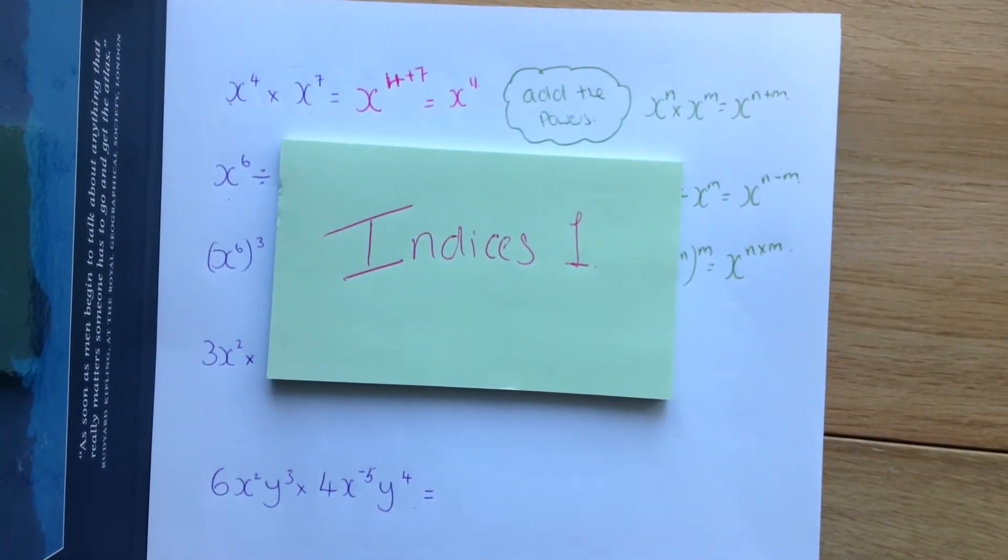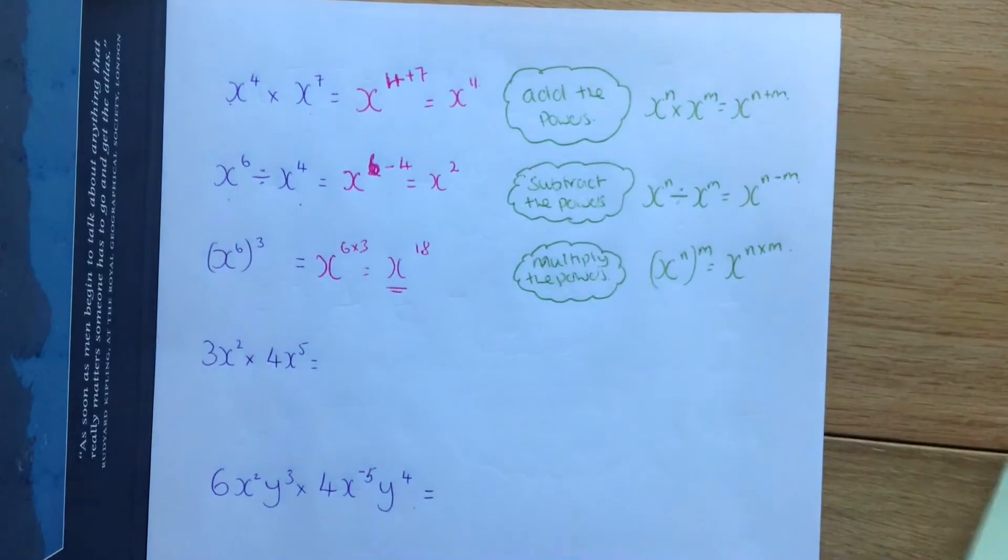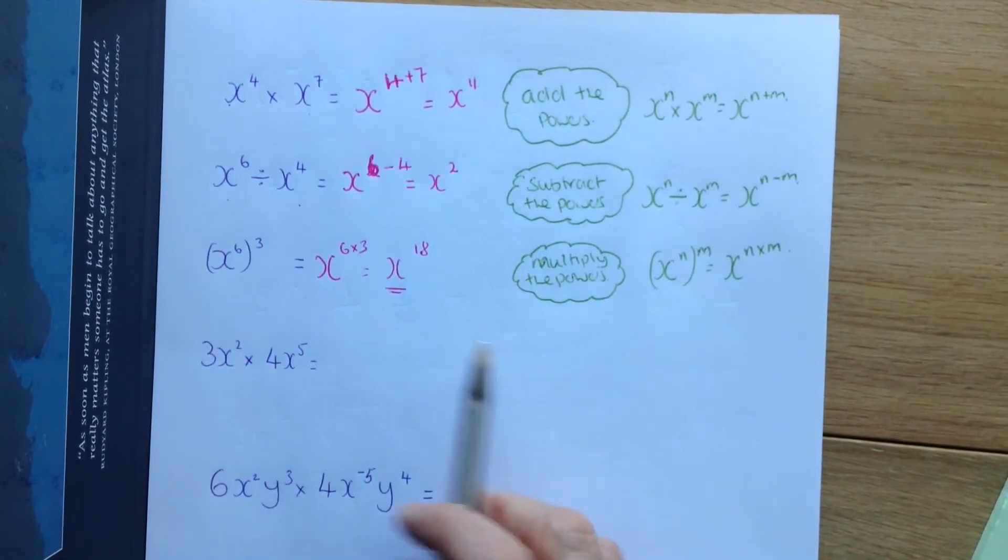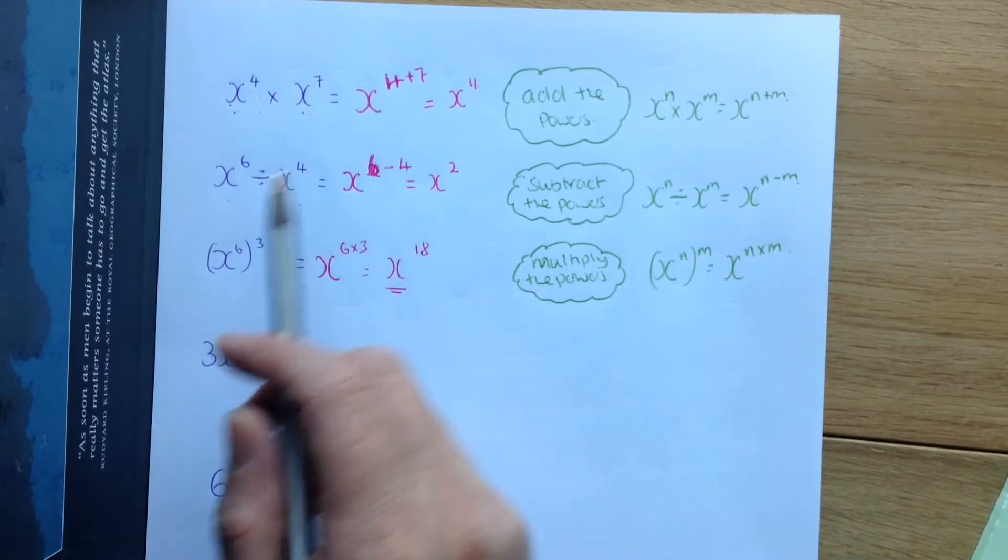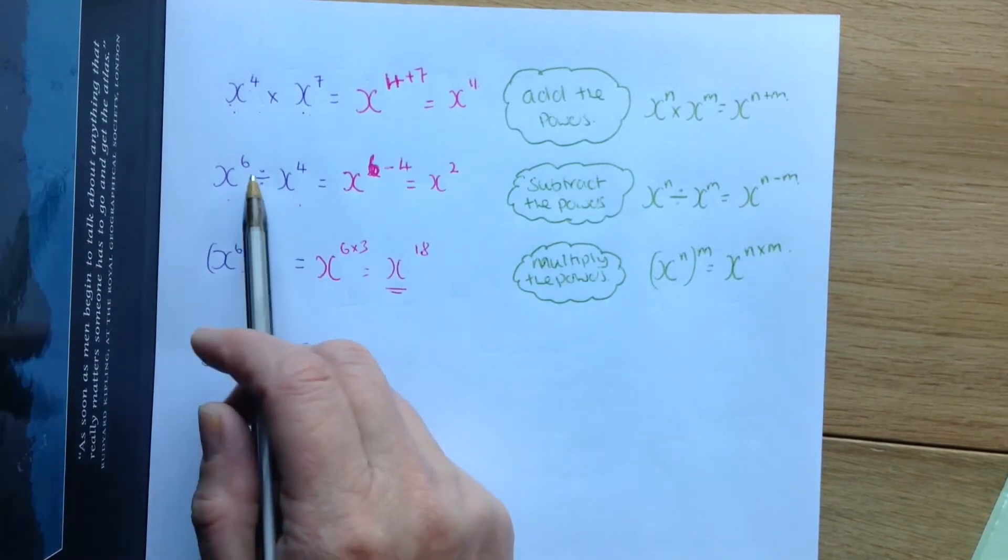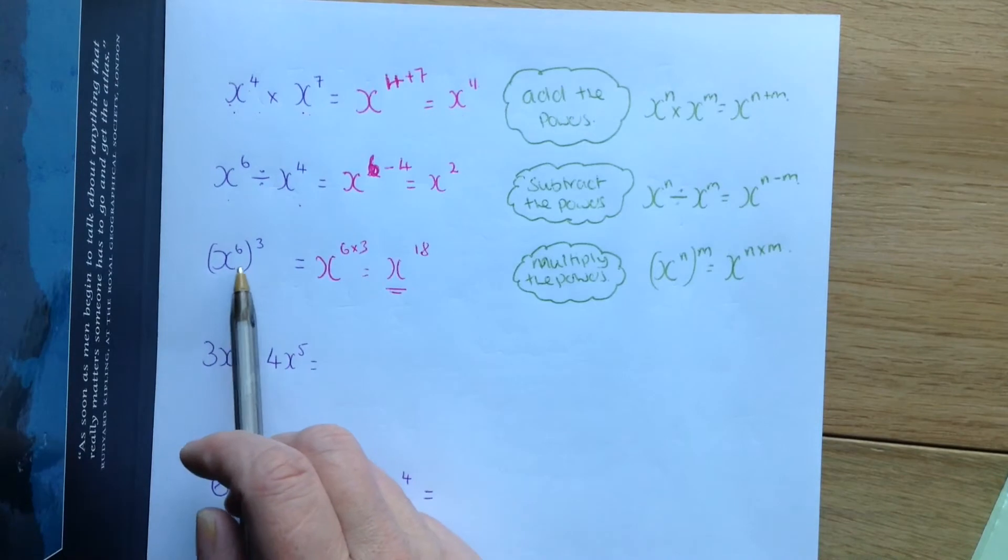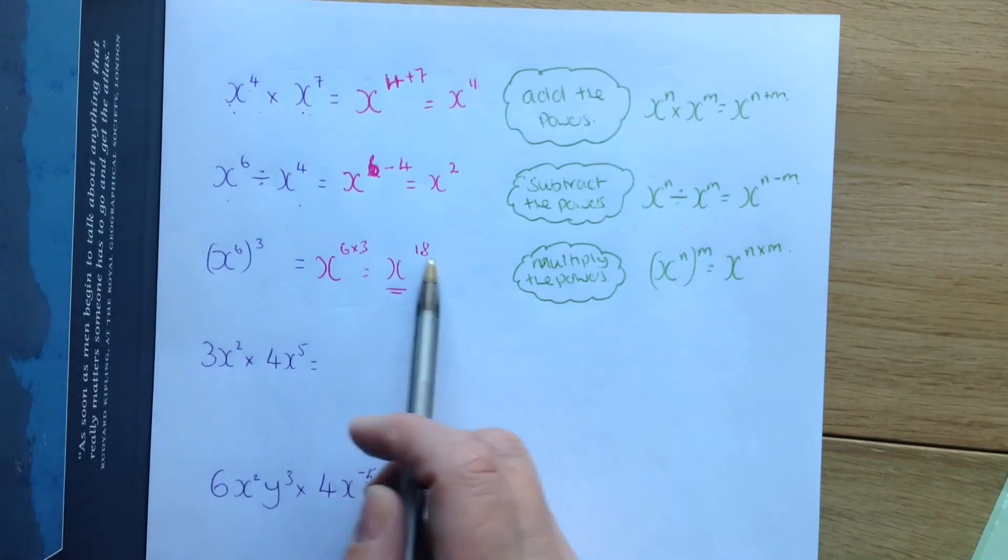Indices. Here are our basic indice rules. When we multiply, remember we add the powers. When we divide, we subtract the powers. When we have a power to a power, we multiply the powers.